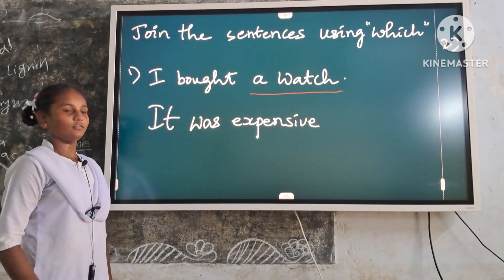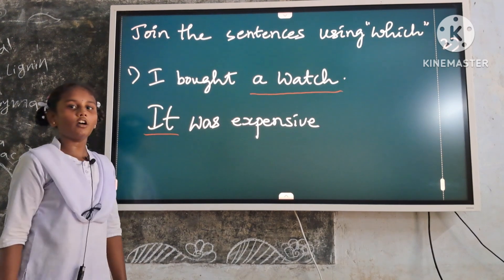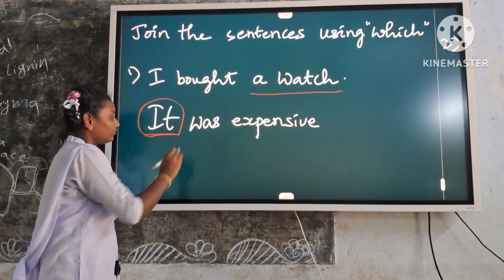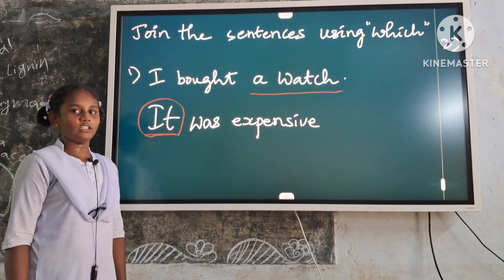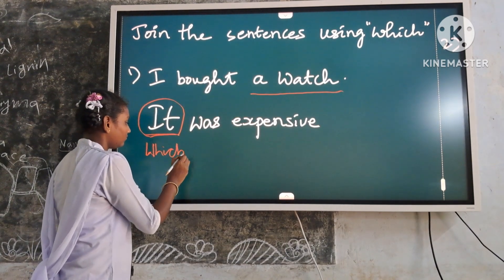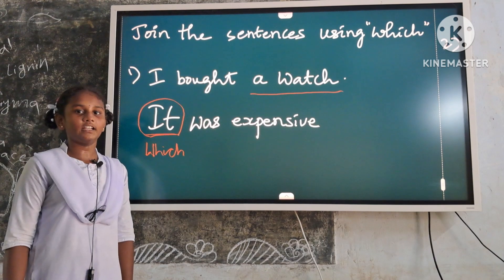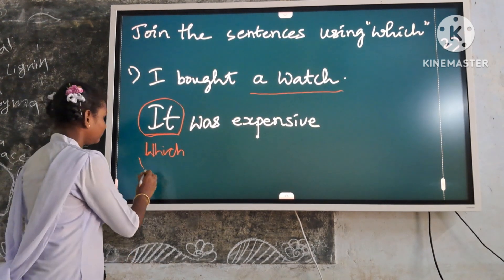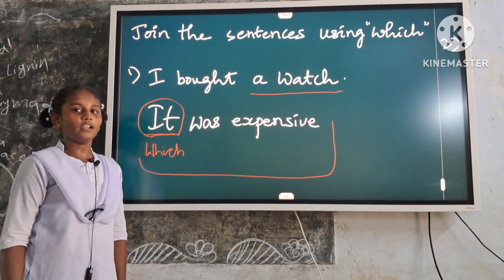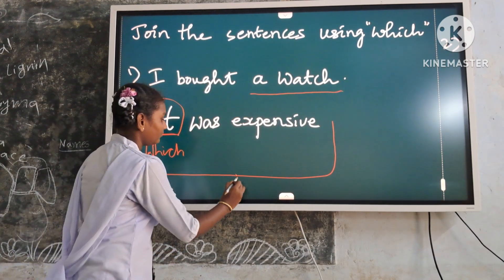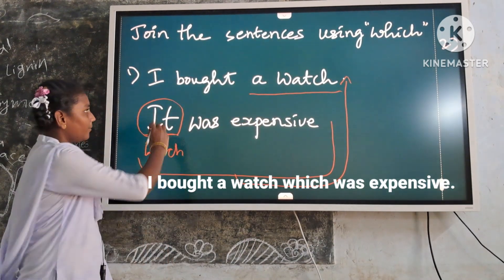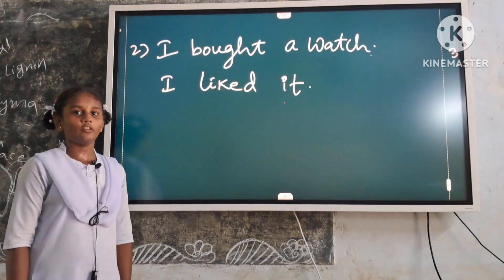Next, identify the related pronoun. Round off the related pronoun in the second sentence. Next, replace it with which. Next, keep the entire second sentence in the bracket. Next, keep the entire second sentence beside the noun phrase of things. Now the answer is ready: I bought a watch which was expensive.